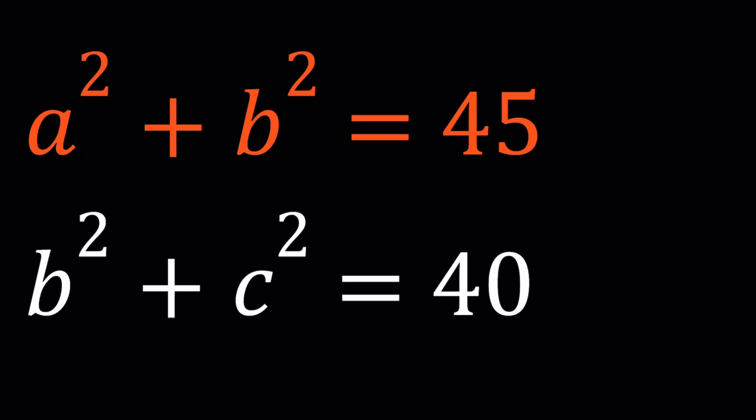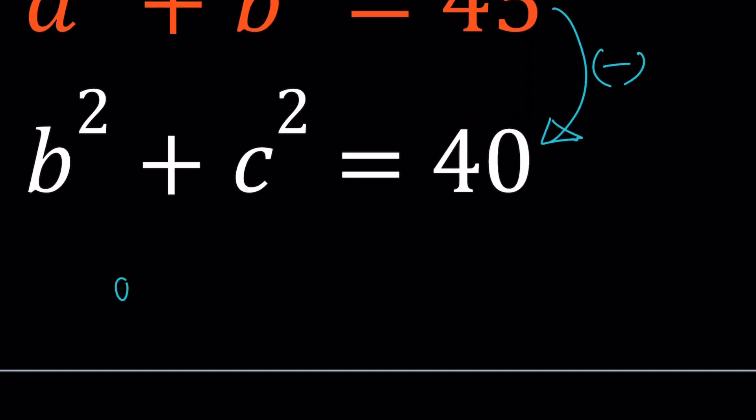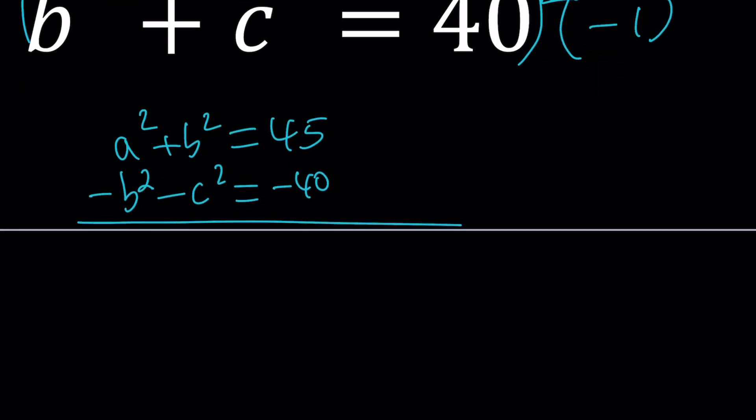But not only that, you'll see, that gives us an extra thing. So, let's go ahead and subtract these two equations. In other words, we have A squared plus B squared equals 45, and I'm going to multiply everything by negative 1 in the second equation. That's going to give me negative B squared minus C squared equals negative 40, and then I'll be adding these two equations. B squared cancels out. I end up with A squared minus C squared, and that gives me 5.